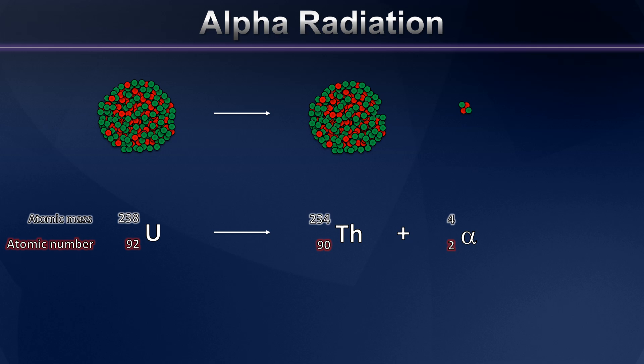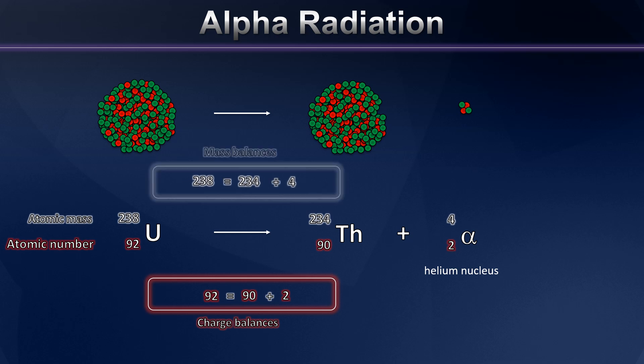This is an alpha decay. Notice what's come out of my nucleus. I've lost two protons and two neutrons. That means I've essentially lost a helium nucleus. Now, look closely at the atomic numbers and atomic masses of all of the parties that are involved here. Notice that the atomic number of uranium 92 is equal to the sum of the two products, right? Thorium and an alpha particle. Notice the atomic masses as well add up, right? So charge is balanced and mass is balanced as well.